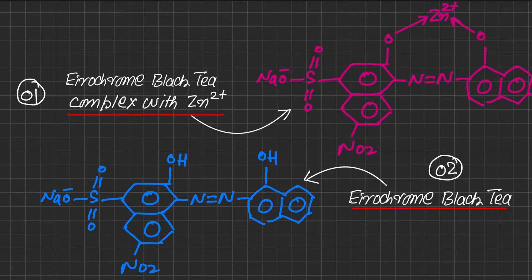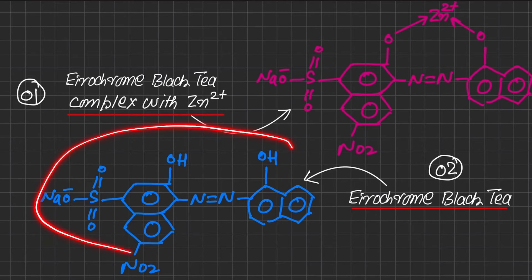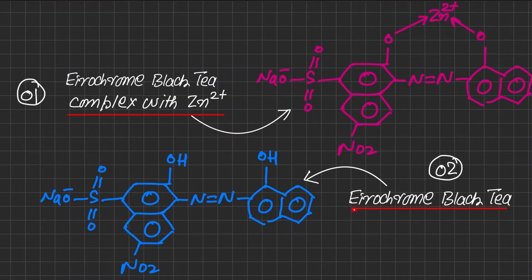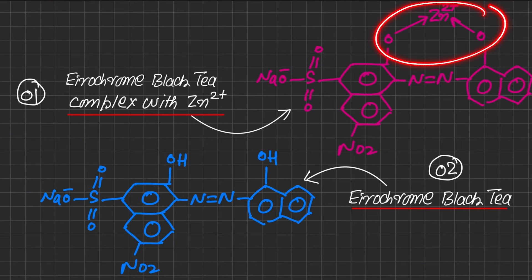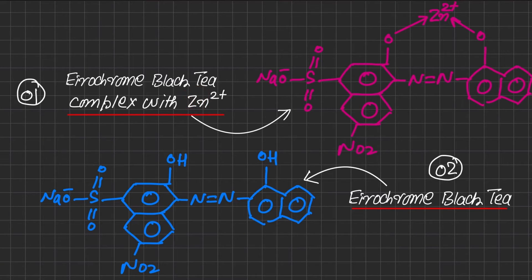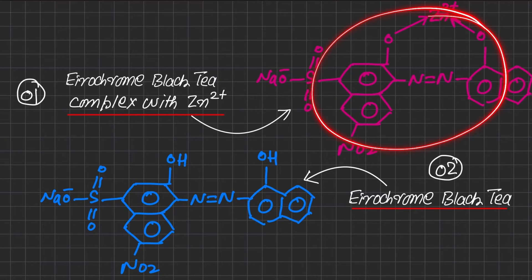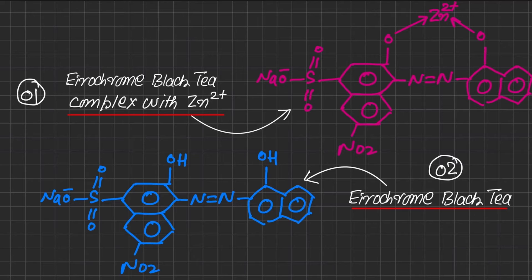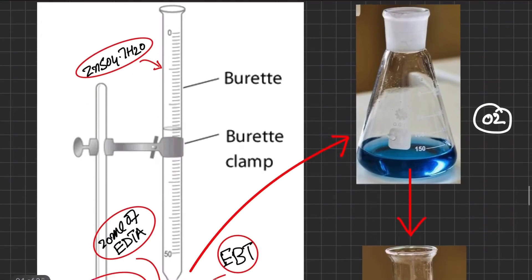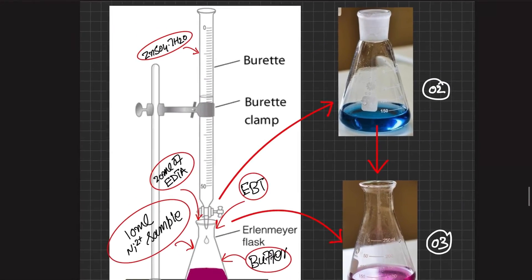This is the structure of Eriochrome Black T or Solochrome Black T. When it does not make any complex with metal, it shows sky blue. But as it forms a chelated complex with a metal such as nickel, the color changes from sky blue to wine red.